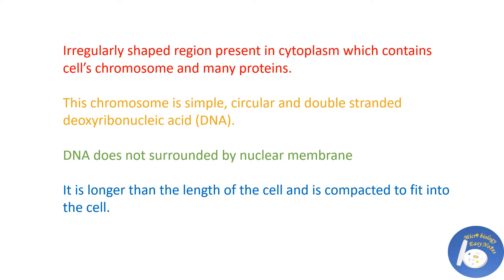The nucleoid is an irregularly shaped region present in the cytoplasm which contains the cell's chromosome and many proteins. The chromosome is simple, circular, and double-stranded DNA. The DNA is not surrounded by a nuclear membrane, which is why it is called a nucleoid. It is longer than the length of the cell and is compacted to fit inside.